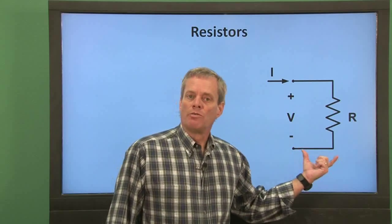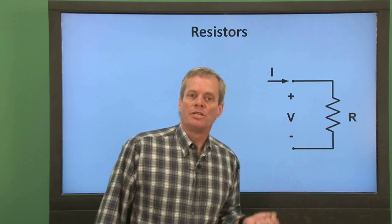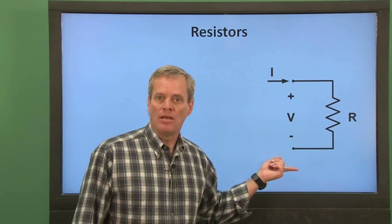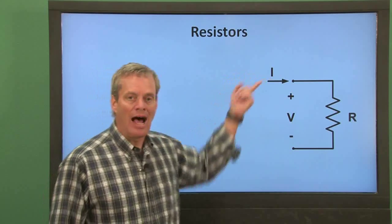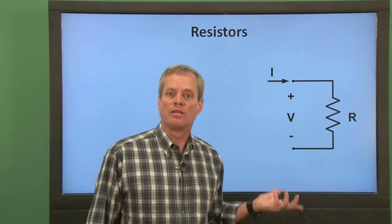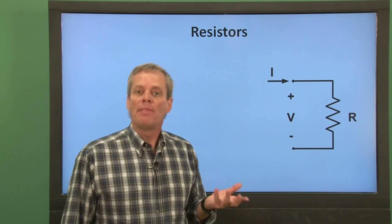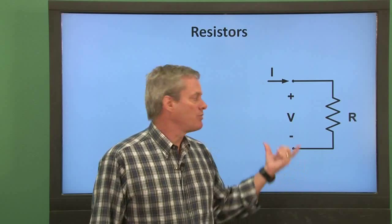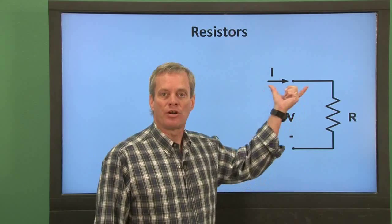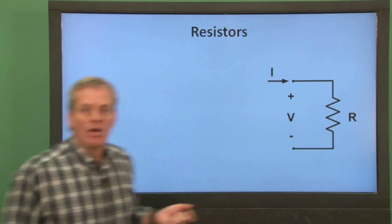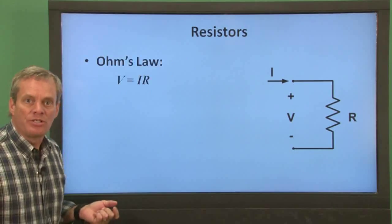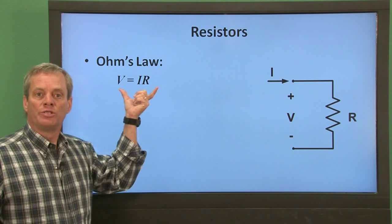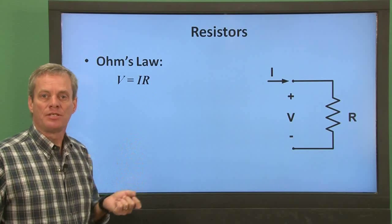This is the symbol we'll use for a resistor. Resistors can typically have some voltage difference, V, across their terminals, and a current, I, entering the positive voltage terminal. Passive circuit elements are described by the relationship between voltage and current at their terminals. For resistors, this relationship is called Ohm's law: voltage equals current times resistance.